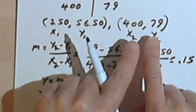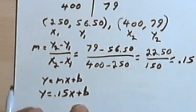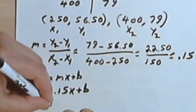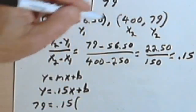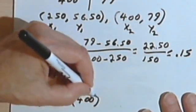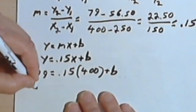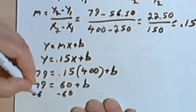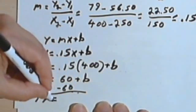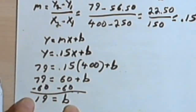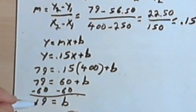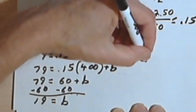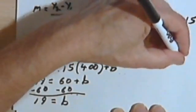And now I'll take one of these ordered pairs, I think I'll use the 400 and the 79, and plug them in for x and y. So instead of y, I'm going to use 79. 79 equals 0.15 times 400 plus b. So let's see, that means 79 equals 60 plus b. I'm going to subtract 60 from both sides. That's going to give me 19 equals b. So 19 must be the fee that they charge, the basic fee, and that's going to be my y-intercept.